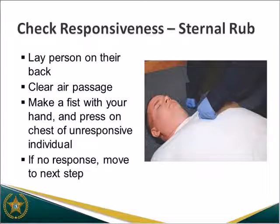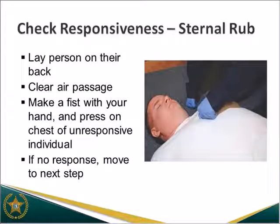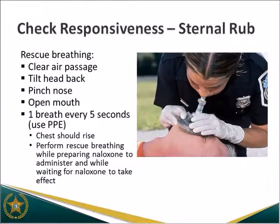Once you've ensured the safety of the scene, you would check the person for responsiveness. The number one sign of an opiate overdose is that this person will be unresponsive. The easiest way to check is to perform a sternal rub: the person would be laying on their back, you make a fist and press it on their chest bone — the sternum — and rub it up and down. This inflicts a safe amount of pain that would wake the person up if they're just unconscious. If they don't wake up within a couple seconds, you know they're unresponsive. As law enforcement, if they are unresponsive after a sternal rub, you can move to your next step.